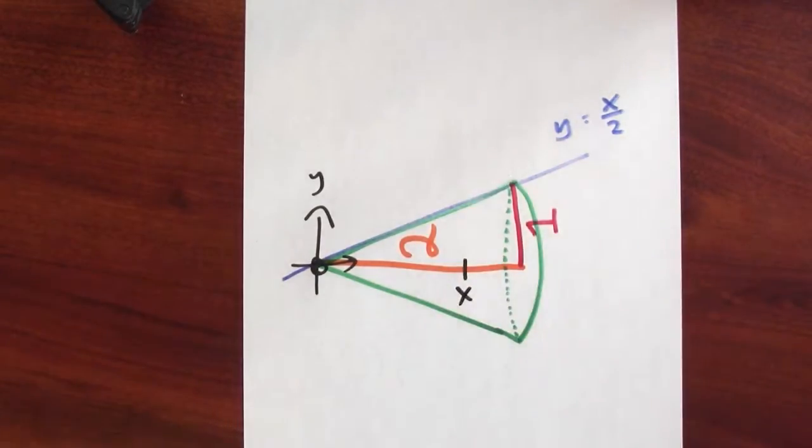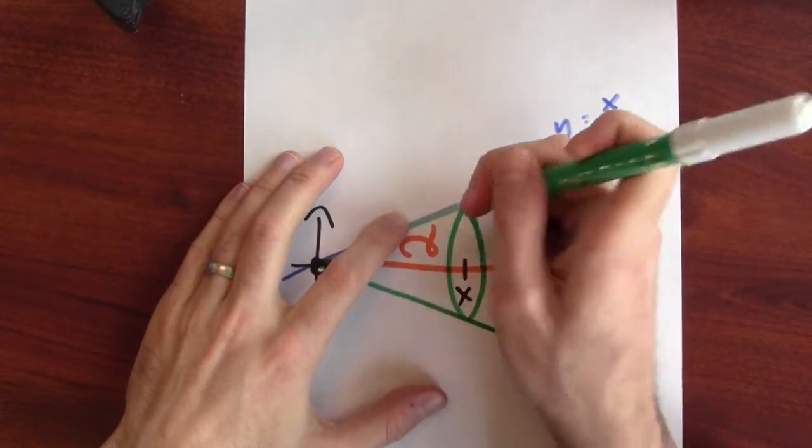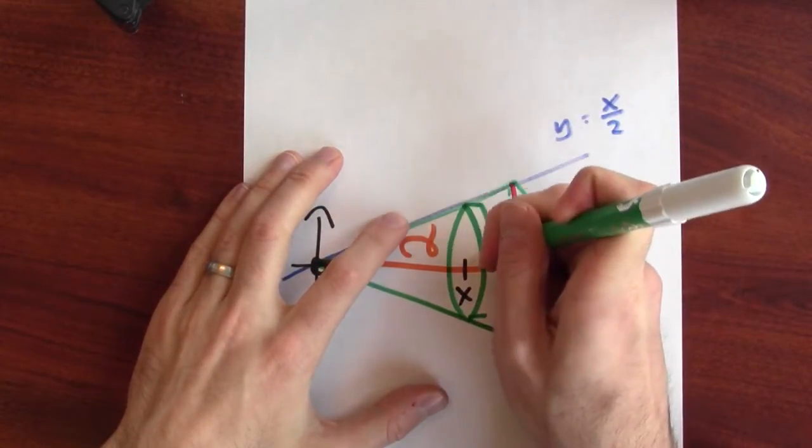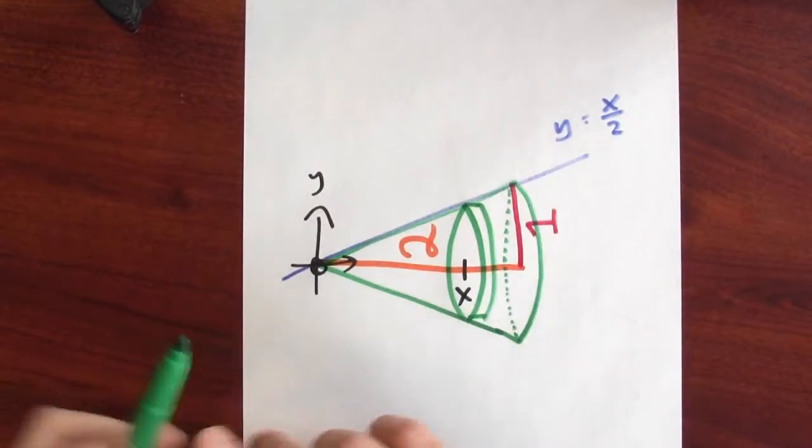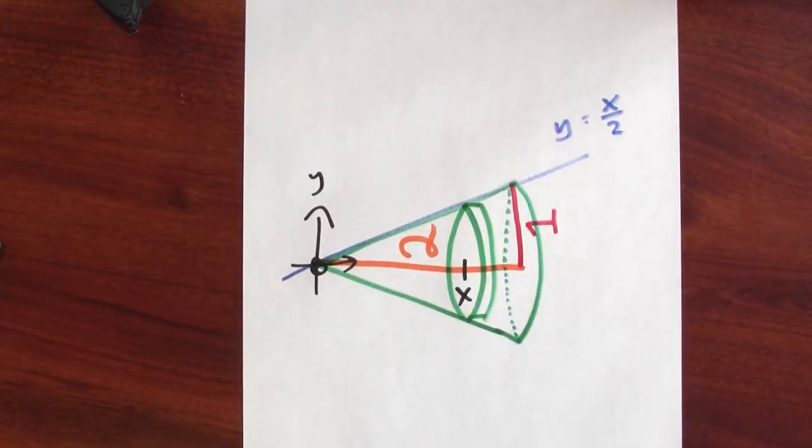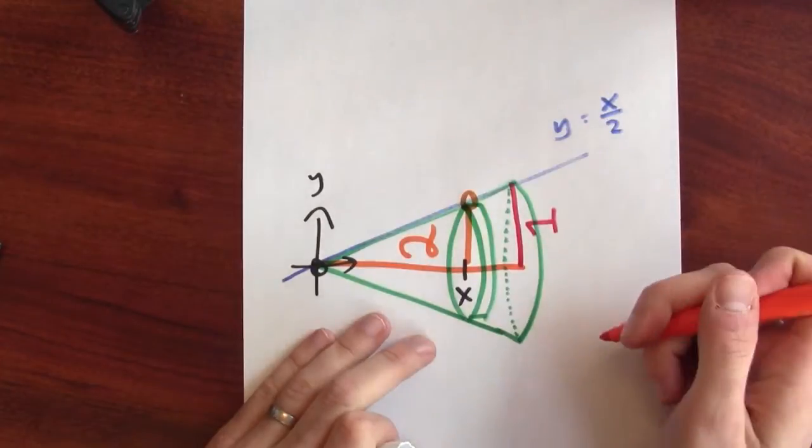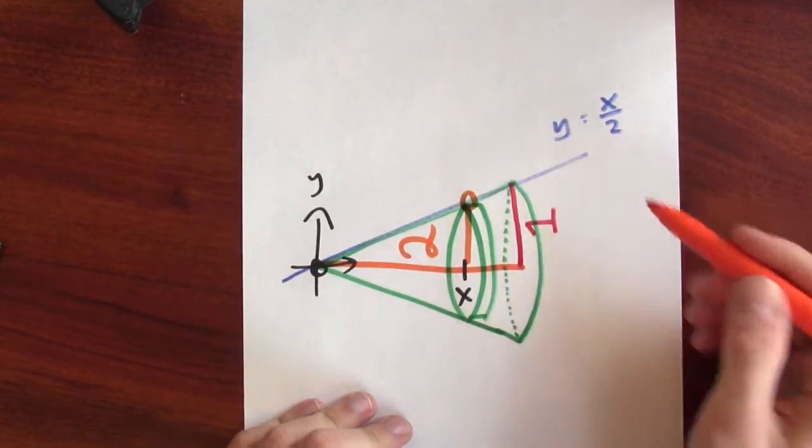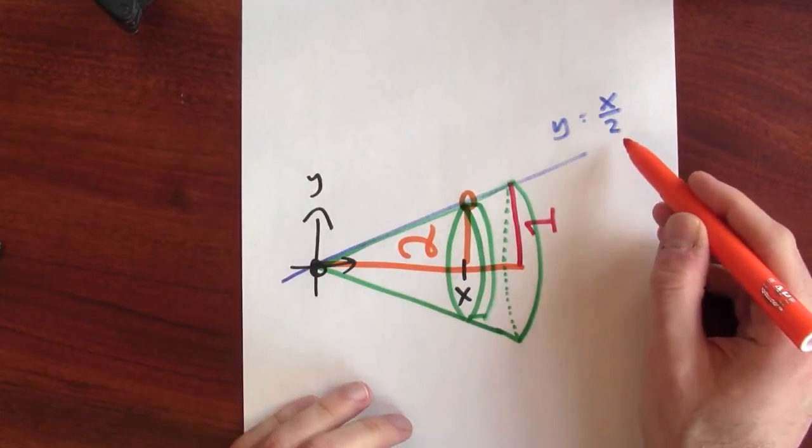Pick some value of x, and let's think about one of the slices, one of these thin cylinders that I'm using to build up the big cone. I don't know the radius of that particular cylinder. Well, it's this distance here, and I know the y-coordinate up there. The y-coordinate is x over 2, so the radius of this cylinder is x over 2.